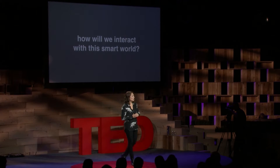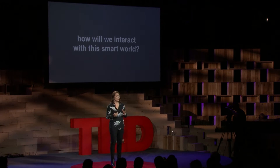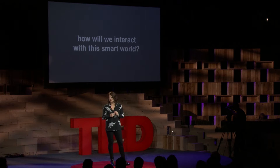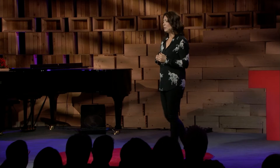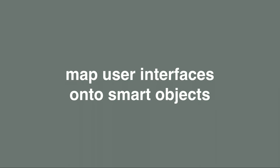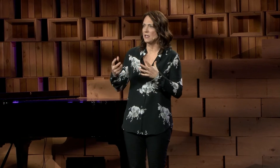But what bothers me about all of this is that this smart world is largely fragmented right now and very incomprehensible to people. And the question that my students and I have been focused on recently is how can we make this world of smart objects more human? How can we make it accessible to all? And the solution we've come up with is to map software functionality onto smart objects to extend their physical capabilities.